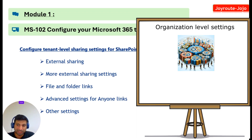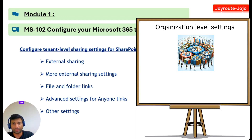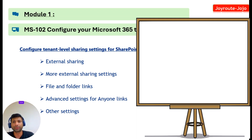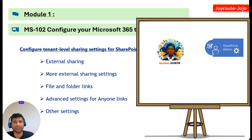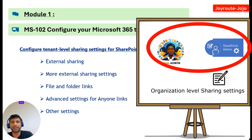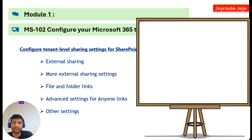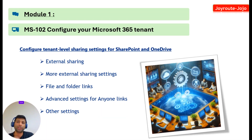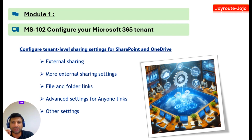To allow external sharing on any site, you must allow it at the organizational level first. OneDrive sharing settings can be the same as or more restrictive than SharePoint settings. Only global administrators and SharePoint administrators in Microsoft 365 can change organizational-level sharing settings. To change the organization external sharing settings for SharePoint and OneDrive, you must navigate to the sharing page of the SharePoint admin center. Let us practically see how we can change these settings.